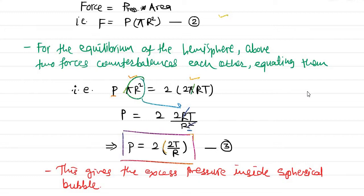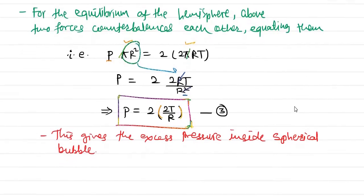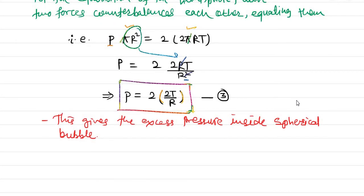If you remember, the bracket 2T/r is nothing but the excess pressure inside a spherical drop, which we saw in the last video. So this complete equation — equation 3 — gives the excess pressure inside the spherical bubble, and it is 2 times the excess pressure inside a spherical drop.